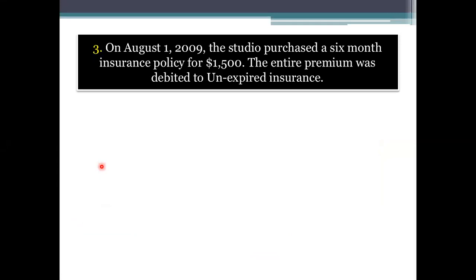Third transaction: on August 1st 2009, the studio purchased a 6-month insurance policy for $1,500. The entire premium was debited to unexpired insurance, which we also call prepaid insurance. The journal entry on August 1st was: prepaid insurance debit and cash credit, because prepaid insurance is an asset and cash is also an asset — when we received the prepaid insurance, we debit it and credit cash.